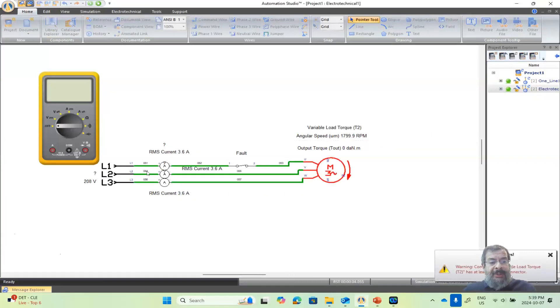This is a three-phase motor supplied from a three-phase supply. Each phase has 3.6, 3.6, and 3.6 amps, so it's a balanced system. It's rotating at around 1800 RPM, so everything is working very well.